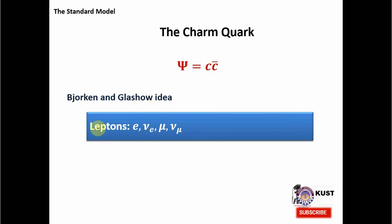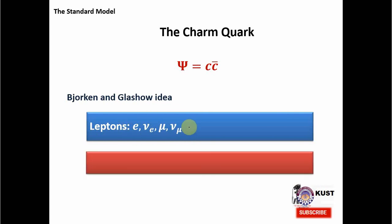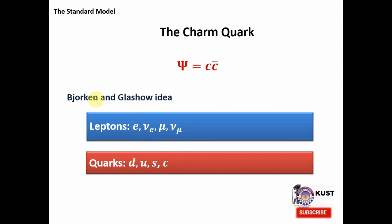This idea can also be found in the work of Bjorken and Glashow, who said that if we have four leptons — electron, electron neutrino, muon, and muon neutrino — these were the four particles discovered by 1974, then in order to have symmetry we must also have four quarks. Down, up, and strange quarks were known at that time, but there was still a vacant place for the fourth quark. The discovery of J/Psi made a good case for having another quark, and Glashow and Bjorken actually calculated its mass and predicted the charm quark.